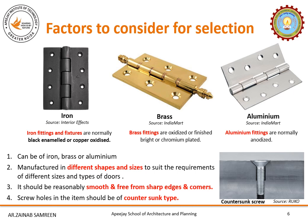There are certain factors you need to keep in mind during the selection of any hardware for doors or windows. Number one, they come in various materials. The three basic materials are iron, brass, or aluminium. Hardware made of iron is usually black enameled or copper oxidized. Brass fittings are oxidized or finished bright or chromium plated, giving a golden color and a rich feeling. The most commonly used are aluminium fittings, which are normally anodized.